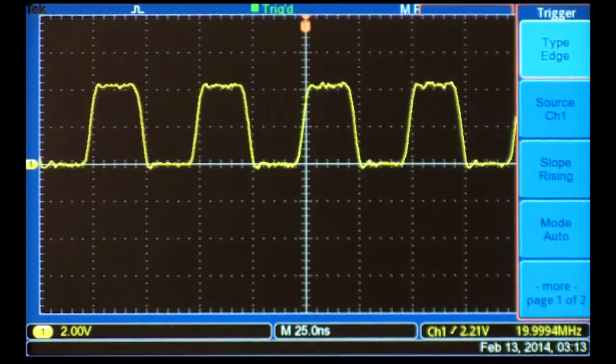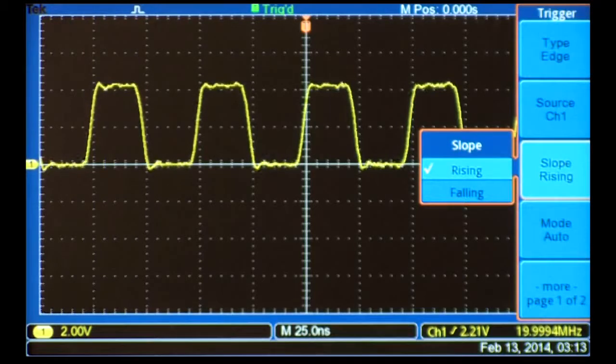The slope control is set so that the scope triggers when the signal is going from low to high, that is, a rising slope.